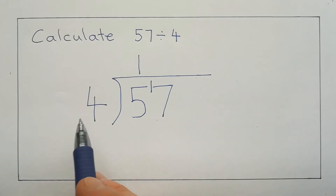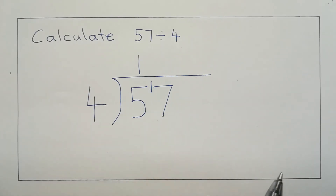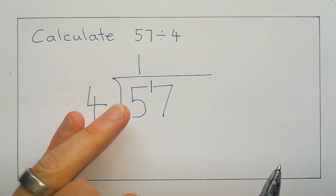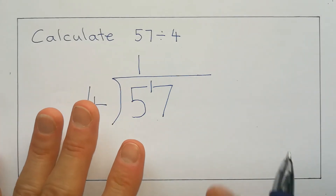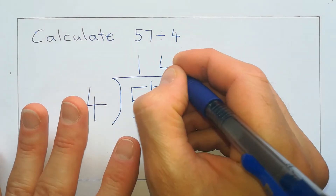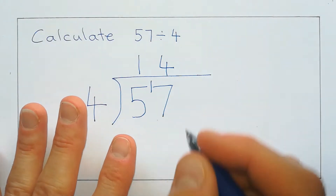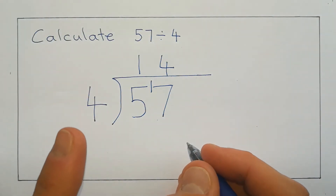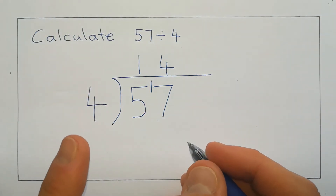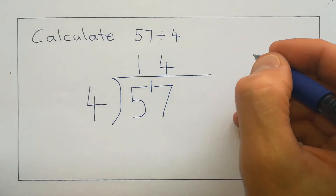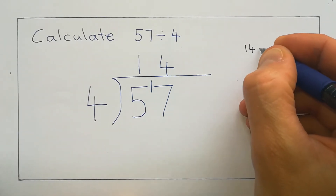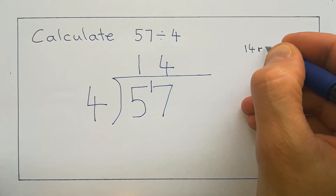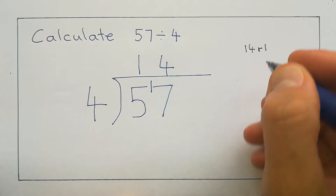So how many times does 4 go into 17? We've got 4, 8, 12, 16 — that's 4 times. And we've got 1 left over to get from 16 to 17. So we could write our answer as 14, and R for remainder, 1.